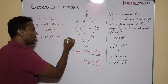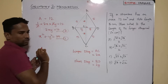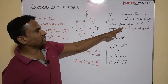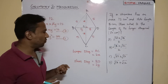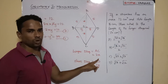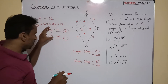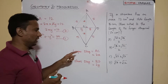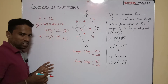To find the length of the longer diagonal, we need to find the value of 2x. We have two equations and will use them to find 2x. Let us carefully see how this works.